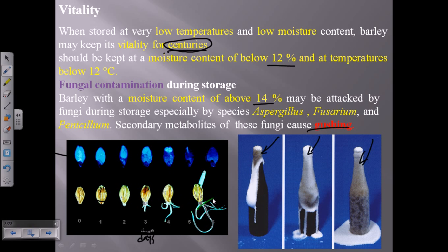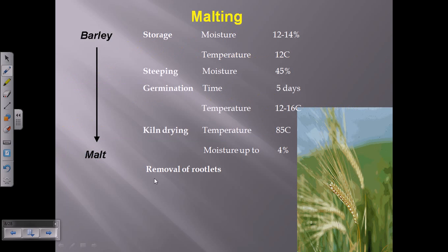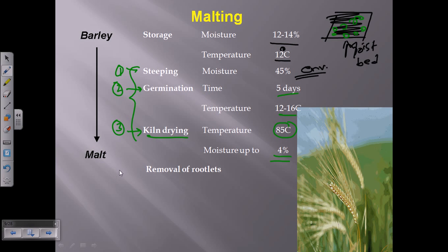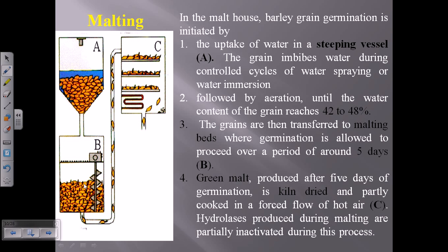After kiln drying, the rootlets and stemlets that have grown out must be cut away. The malt itself is retained because during germination it provides all the necessary nutrients for beer preparation. In steeping, the barley is placed into steeping water at 45 to 50% moisture, followed by aeration until the water content of the grain reaches 42 to 48%. Grains are then transferred to the malting beds and allowed to germinate for five days, producing what is called green malt.